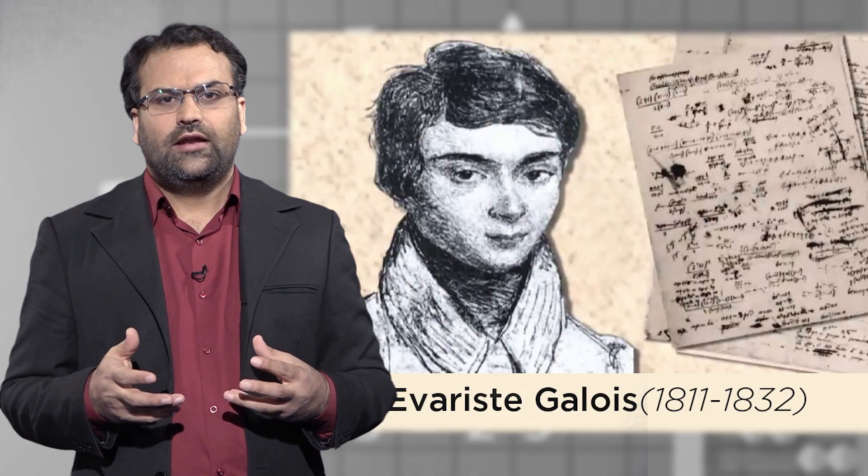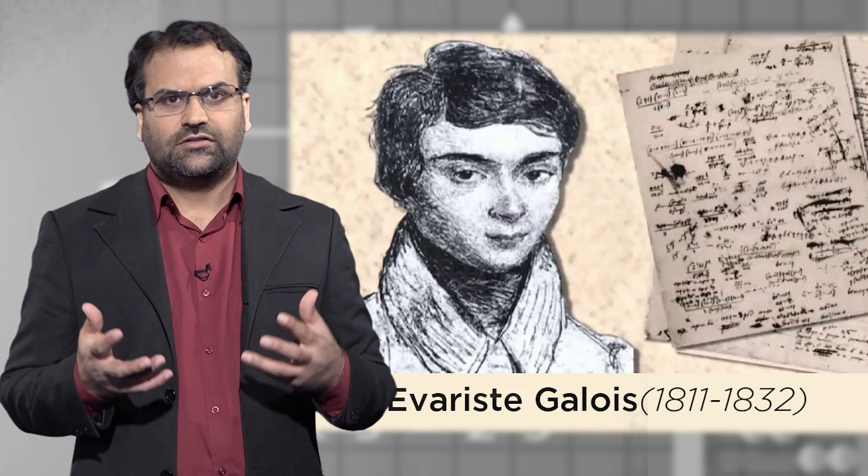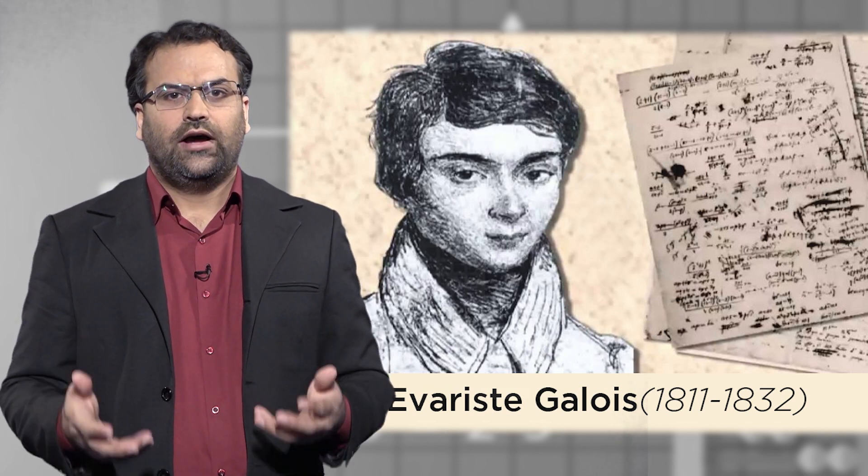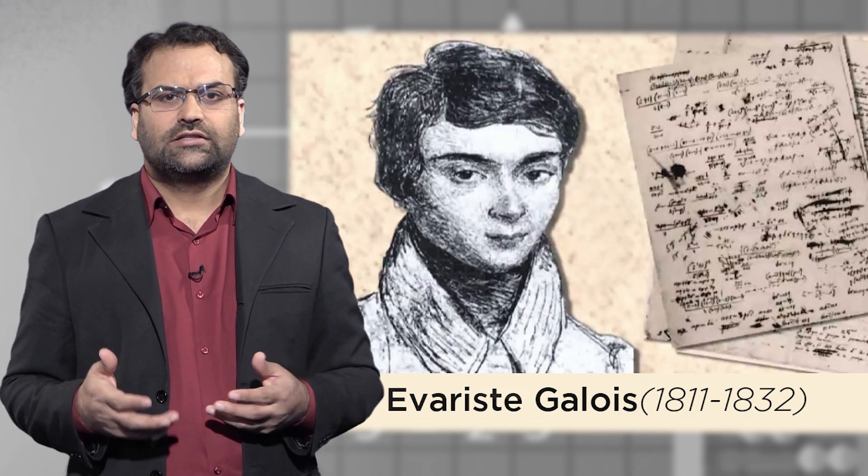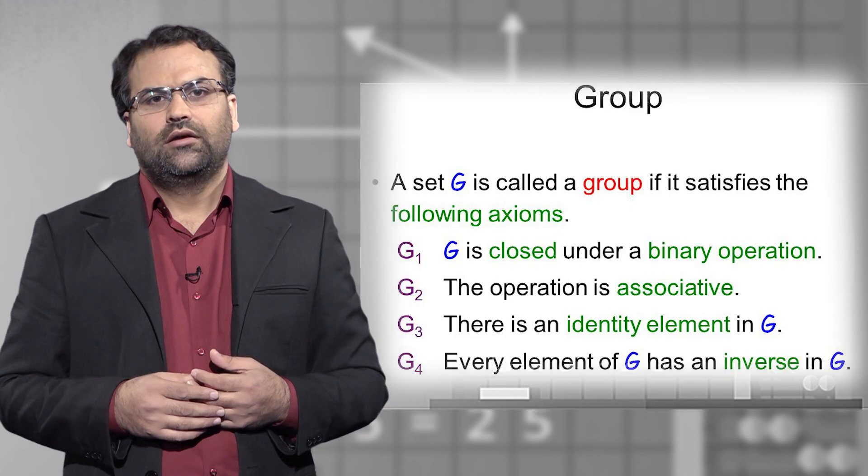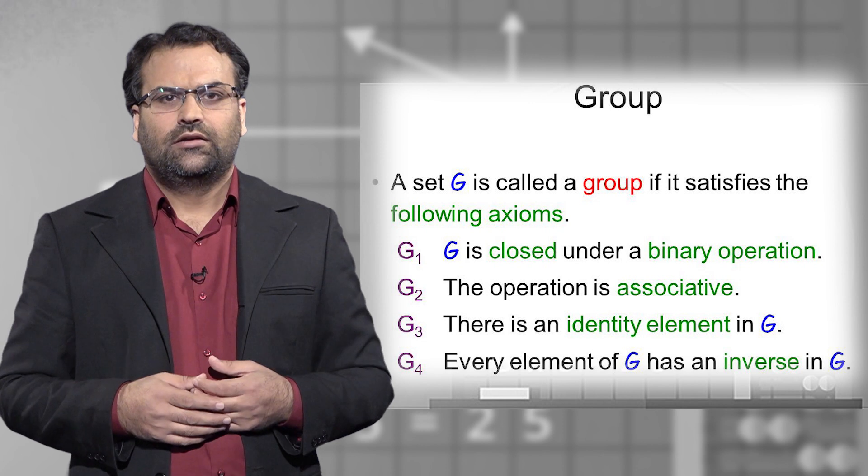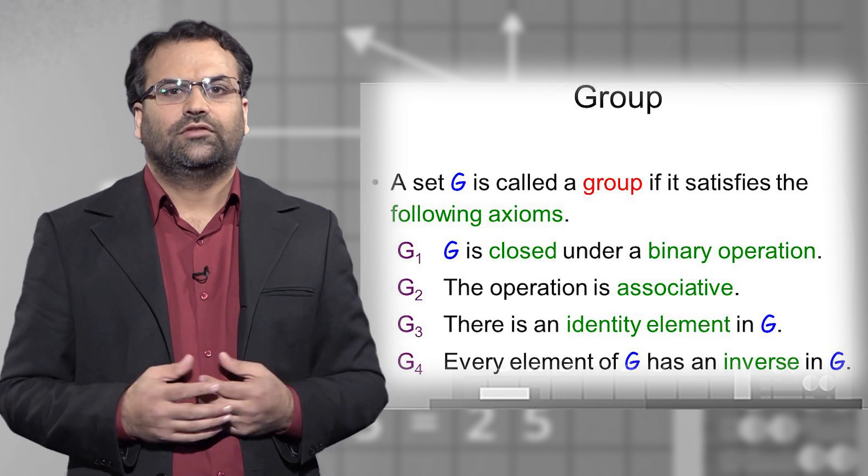Meanwhile, a young Frenchman, Évariste Galois, dramatically enters the story of algebra with his radical new algebra. Galois ingeniously solved the classical problem of algebra by introducing something he called group, as he said, with identity and invertible elements which can be associated.